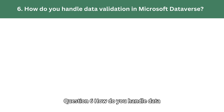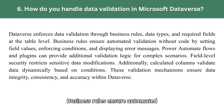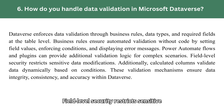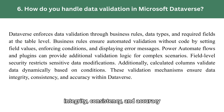Question 6: How do you handle data validation in Microsoft Dataverse? Dataverse enforces data validation through business rules, data types, and required fields at the table level. Business rules ensure automated validation without code by setting field values, enforcing conditions, and displaying error messages. Power Automate flows and plugins can provide additional validation logic for complex scenarios. Field-level security restricts sensitive data modifications. Additionally, calculated columns validate data dynamically based on conditions. These validation mechanisms ensure data integrity, consistency, and accuracy within Dataverse.